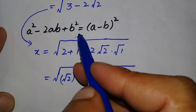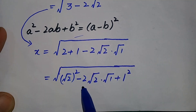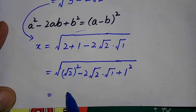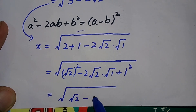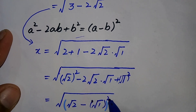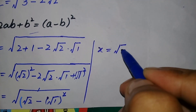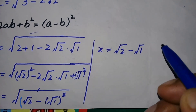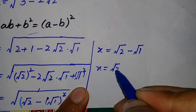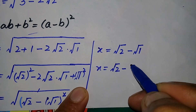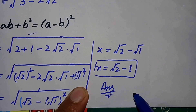This matches the algebraic identity a squared minus 2ab plus b squared, which equals a minus b whole squared. So the right hand side becomes square root of square root of 2 minus square root of 1, whole squared. The square and the square root cancel each other, leaving x equals square root of 2 minus square root of 1. Since square root of 1 is 1, the answer and solution of this exponential equation is x equals square root of 2 minus 1.